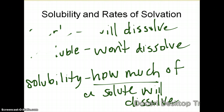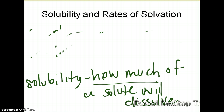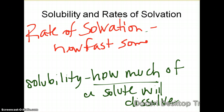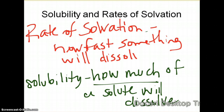Don't mistake solubility with the rate of solvation. The rate of solvation is how fast something will dissolve, which of course assumes it's soluble. To have a solubility or a rate of solvation, you must have a soluble solute. We'll do a lab on the rate of solvation as well as a lab on the solubility of substances.